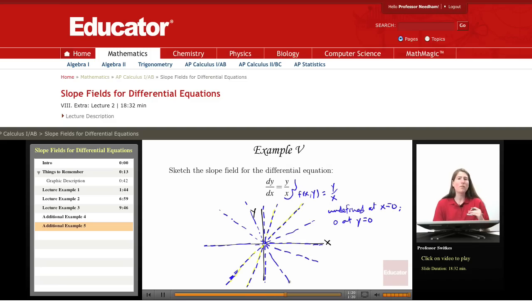And if you take a differential equations course in college, what you'll see is that many nice differential equations for a given initial condition have only one solution curve passing through that initial condition. Here, 0, 0 is causing all sorts of trouble.